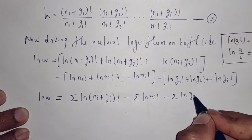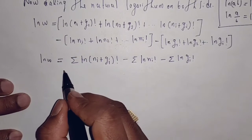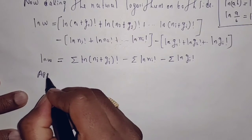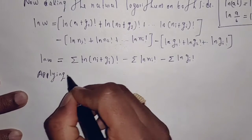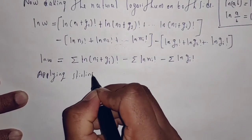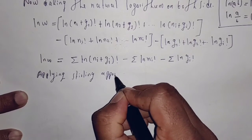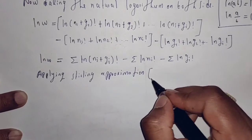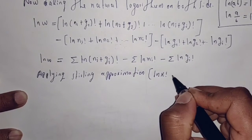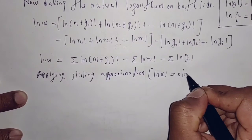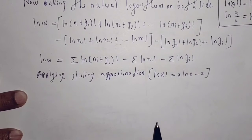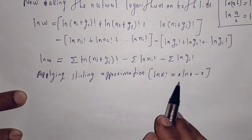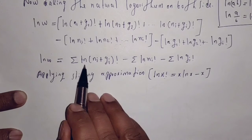Now let us apply Stirling's approximation to the above equation. Applying Stirling's approximation: ln(x!) = x·ln(x) - x. We can replace ln(x!) by x·ln(x) - x. I am going to apply this Stirling's approximation to the above equation.